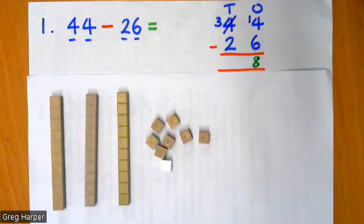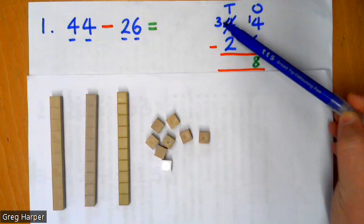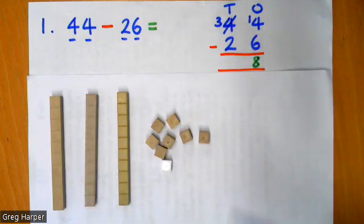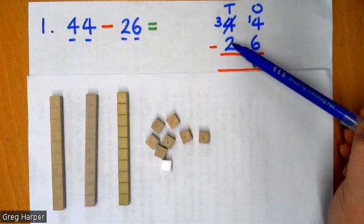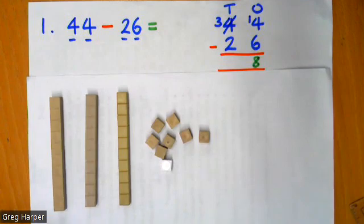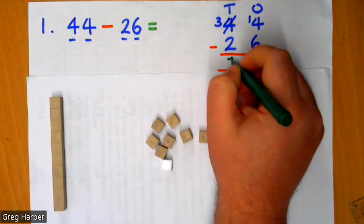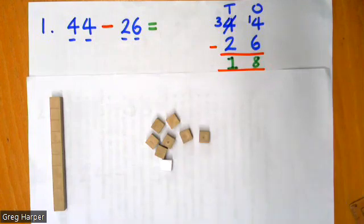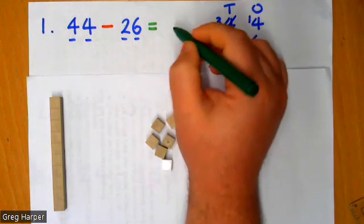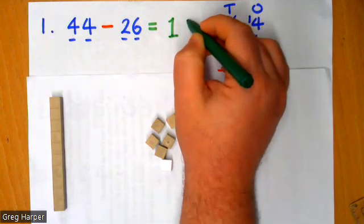Now, finally, in my sum, I have three tens. And I know I've got three tens left, because I just exchanged one of them. And I'm taking two tens away. So I'm just going to remove two of my tens. And I can see now that I only have one ten left. So my answer is 18. One ten and eight ones.